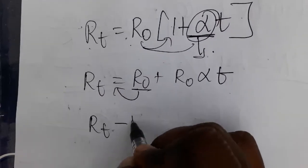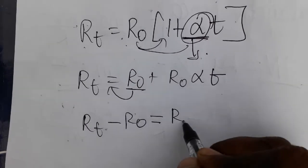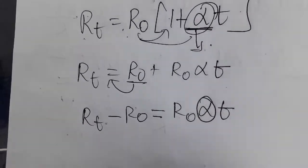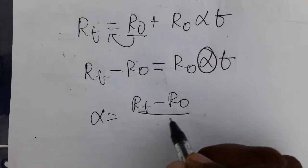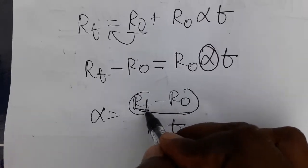Taking R0 from left hand side to right hand side, RT minus R0 equals R0 alpha T. So we are going to find alpha only. Alpha equals RT minus R0 divided by R0 into T.